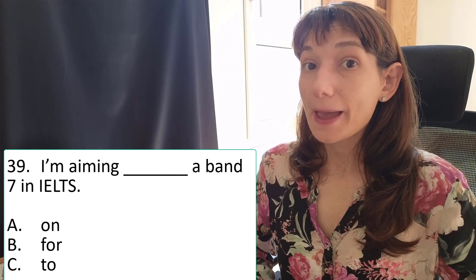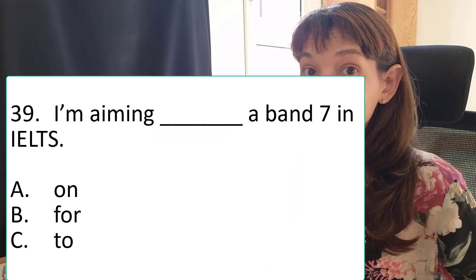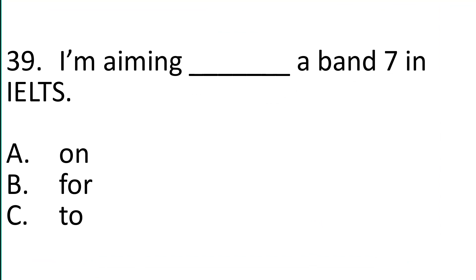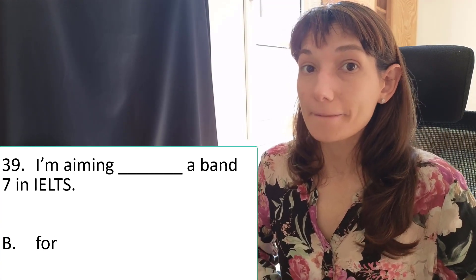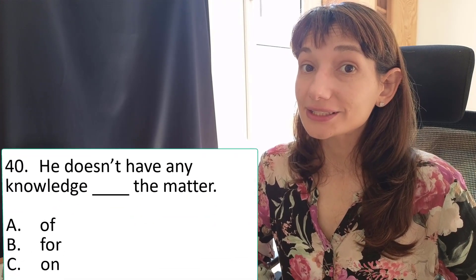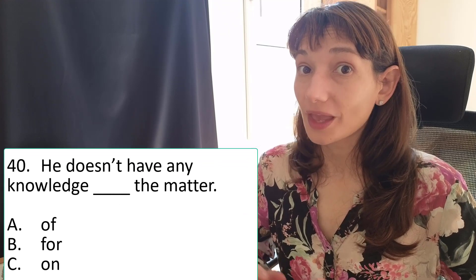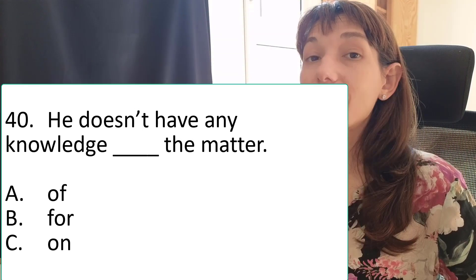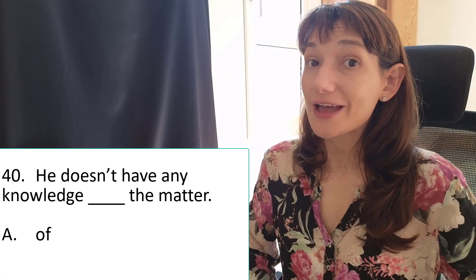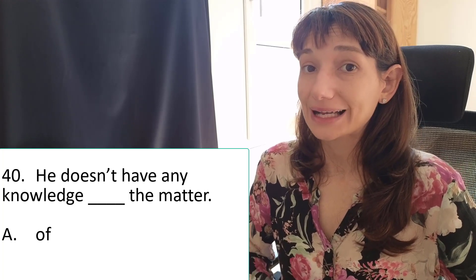I am aiming a band 7 in IELTS. And the correct answer is I am aiming for a band 7 in IELTS. He doesn't have any knowledge of the matter. And the correct answer is he doesn't have any knowledge of the matter.